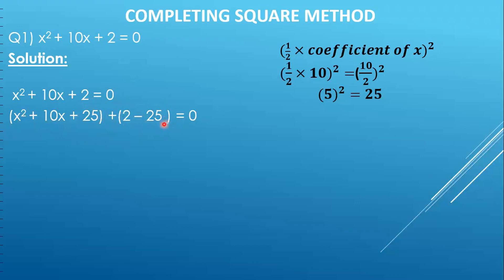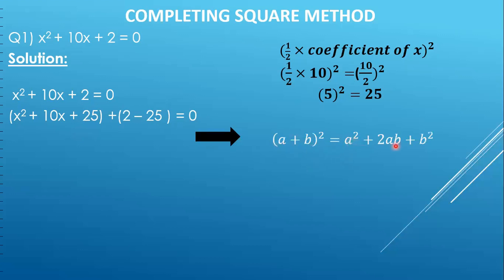Now look at this term carefully: x squared plus 10x plus 25. Try to recall whether you have seen a similar expression before. This is the result of a formula from your 8th standard. The formula is a plus b, the whole square, which gives us a squared plus 2ab plus b squared.